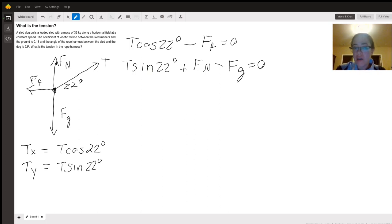At first glance, it looks like we have too many unknowns because we don't know the force of friction and we don't know the normal force. But we can rewrite our first equation in terms of the normal force, which gives us T cosine 22° minus μF_N equals zero.